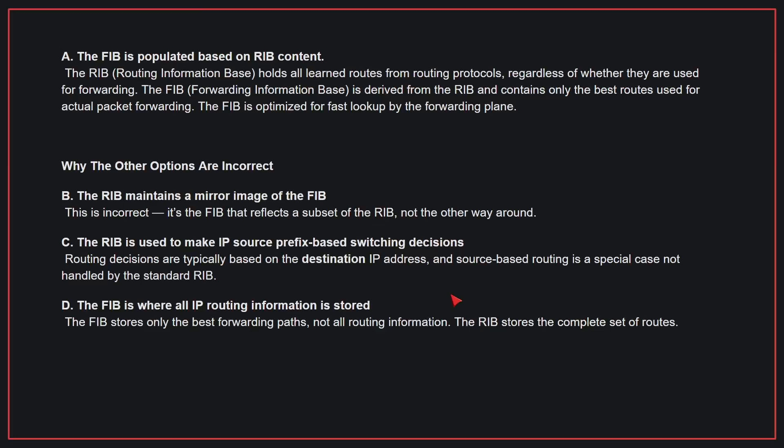Why the other options are incorrect? B: This is incorrect — it's the FIB that reflects a subset of the RIB, not the other way around. C: Routing decisions are typically based on the destination IP address, and source-based routing is a special case not handled by the standard RIB. D: The FIB stores only the best forwarding paths, not all routing information; the RIB stores the complete set of routes. Therefore, the correct answer is A.